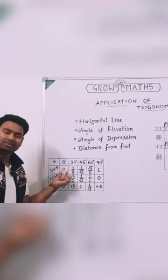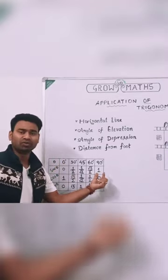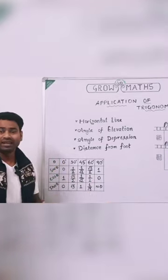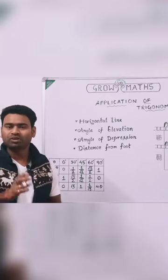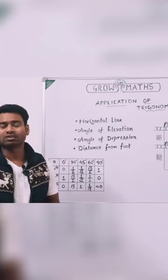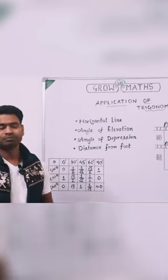Sine 0 is 0 and sine 90 is 1. It is clearly visible — you can observe. Observation in maths is very very important.